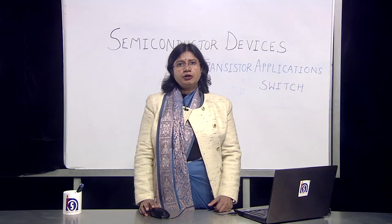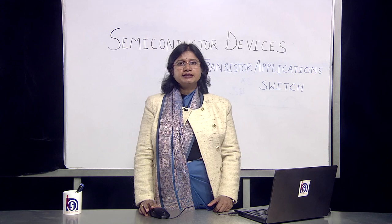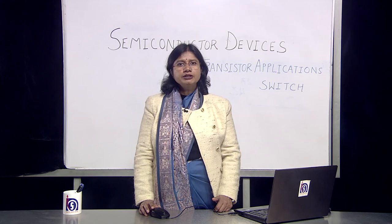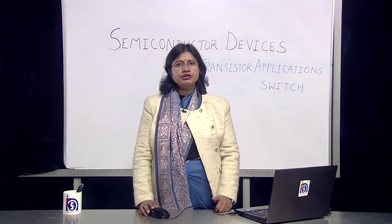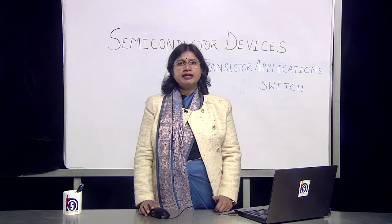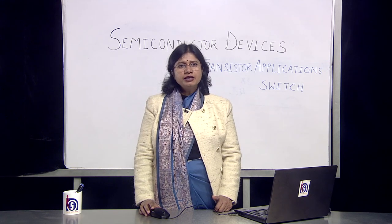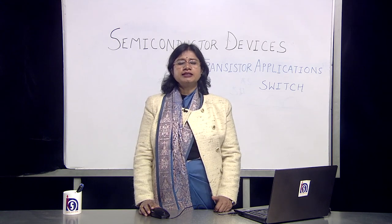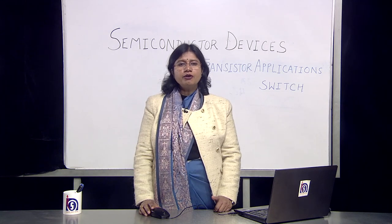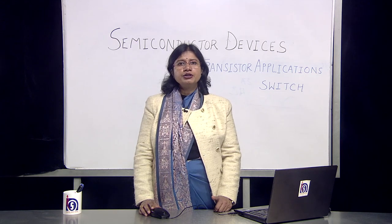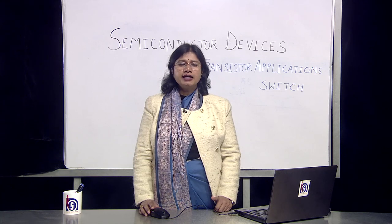In this topic, we discussed the role of the transistor as a switch in a typical common emitter configuration. We understood the working of a transistor as a switch in the cutoff region and its applications. One common application discussed is the LED indicator, where the LED glows or switches off using the transistor as a switch — commonly used in a large number of display devices.